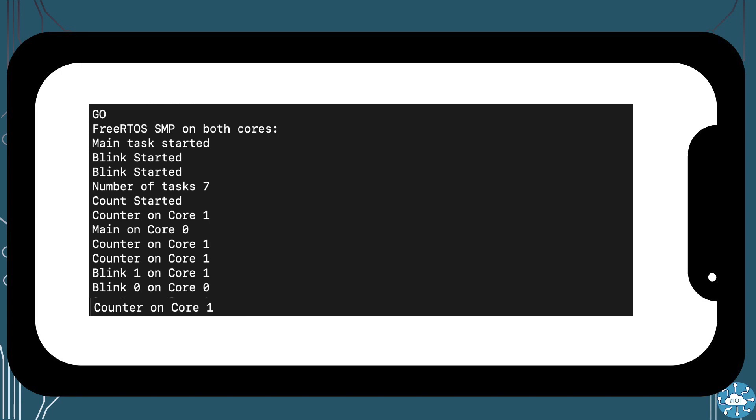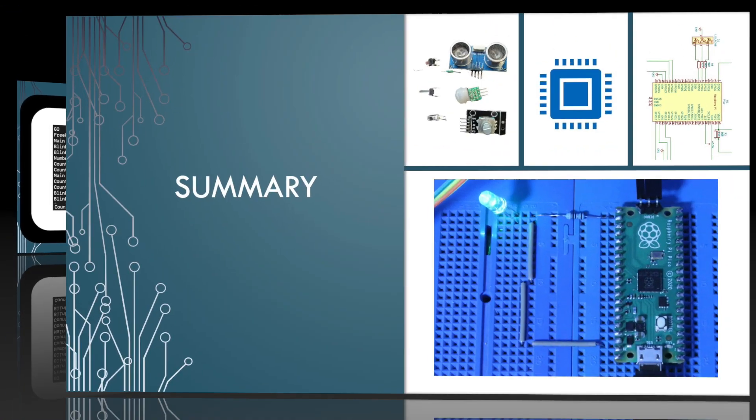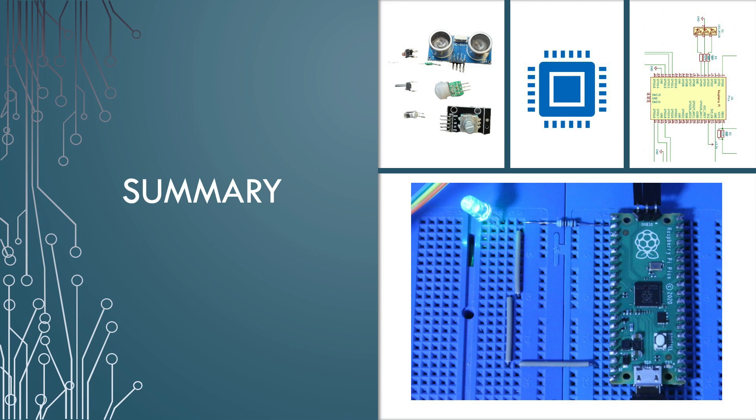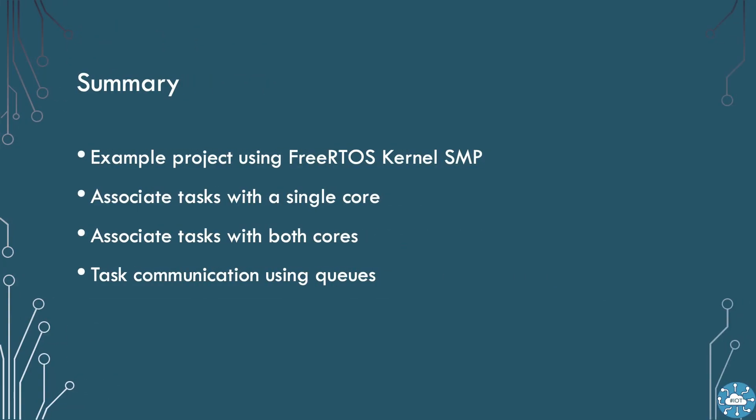Our counter agent is able to pick them up from its queue and display them. This has been a short tutorial on using SMP on the Raspberry Pico. Please like and subscribe for more content. This tutorial has been quite a rapid tour of FreeRTOS kernel SMP. It has demonstrated how tasks can be associated with a particular core, or allowed to run against both cores. We have shown that queues can be used to communicate from either core.